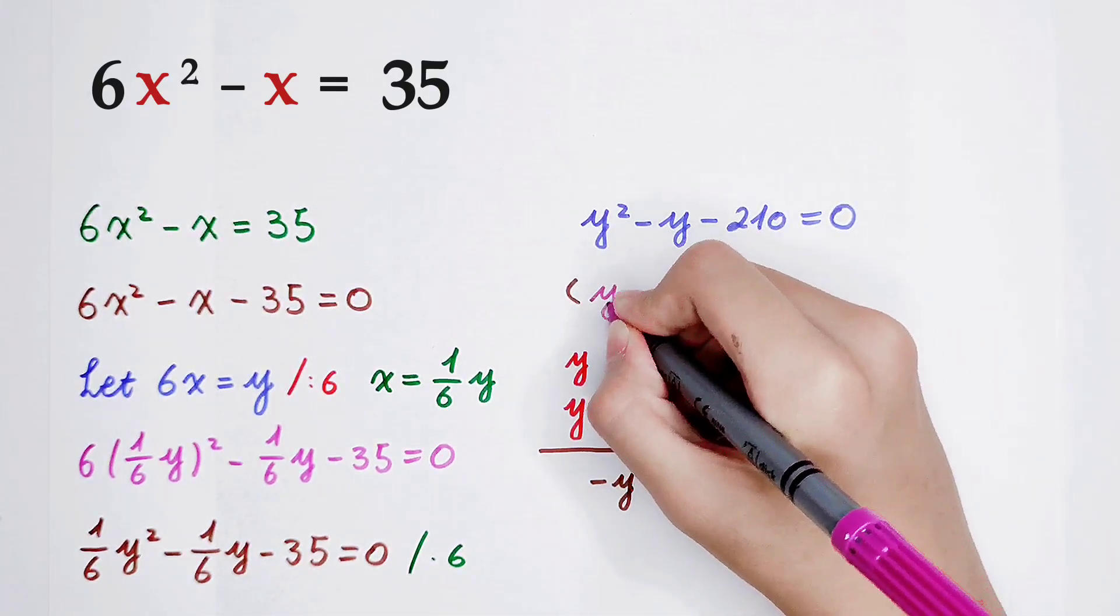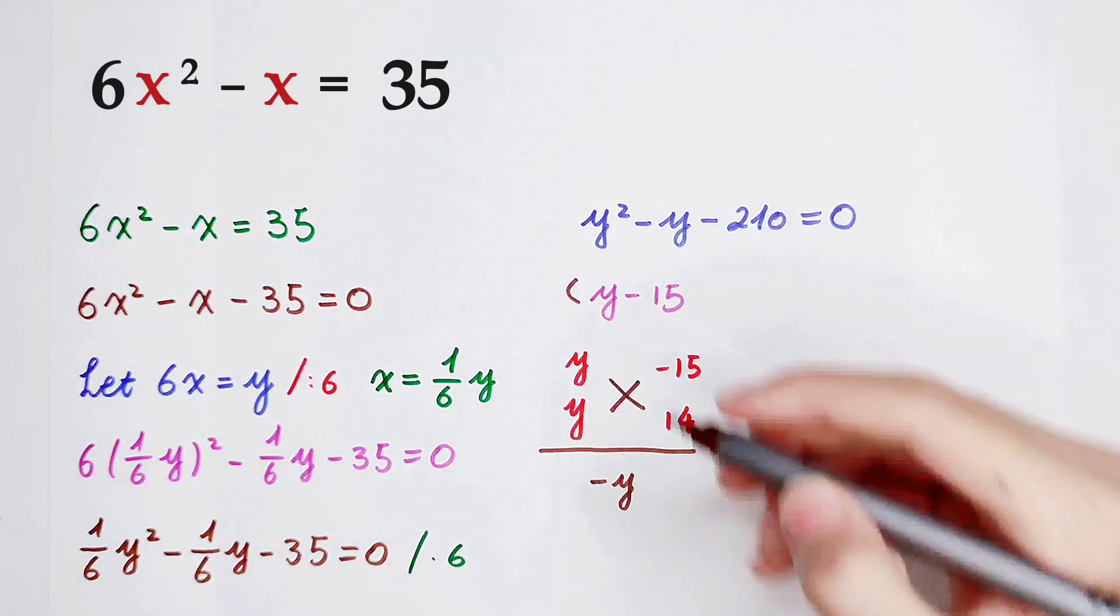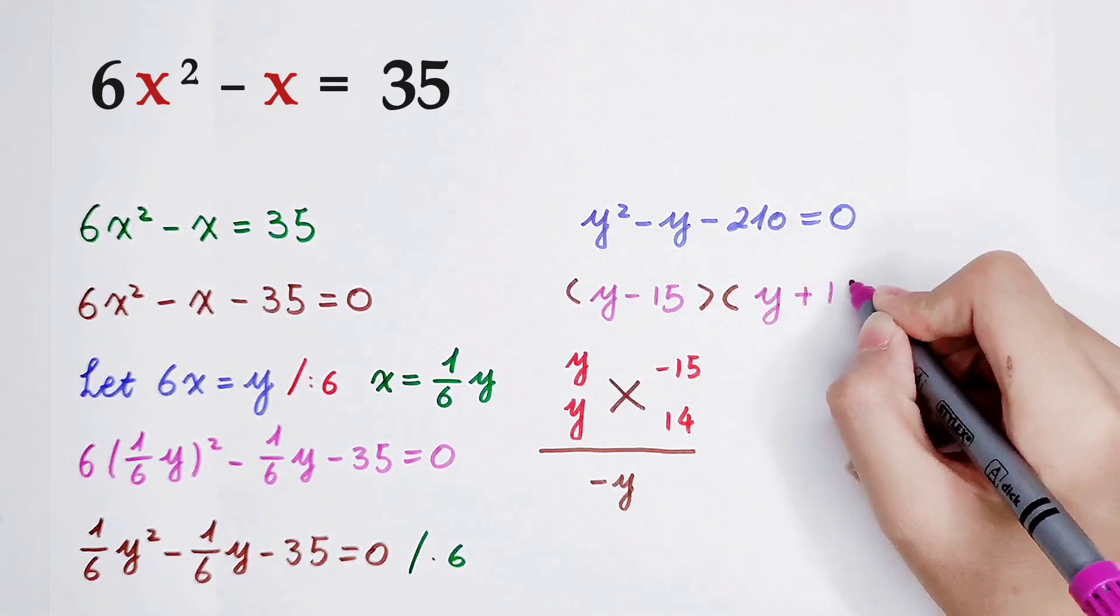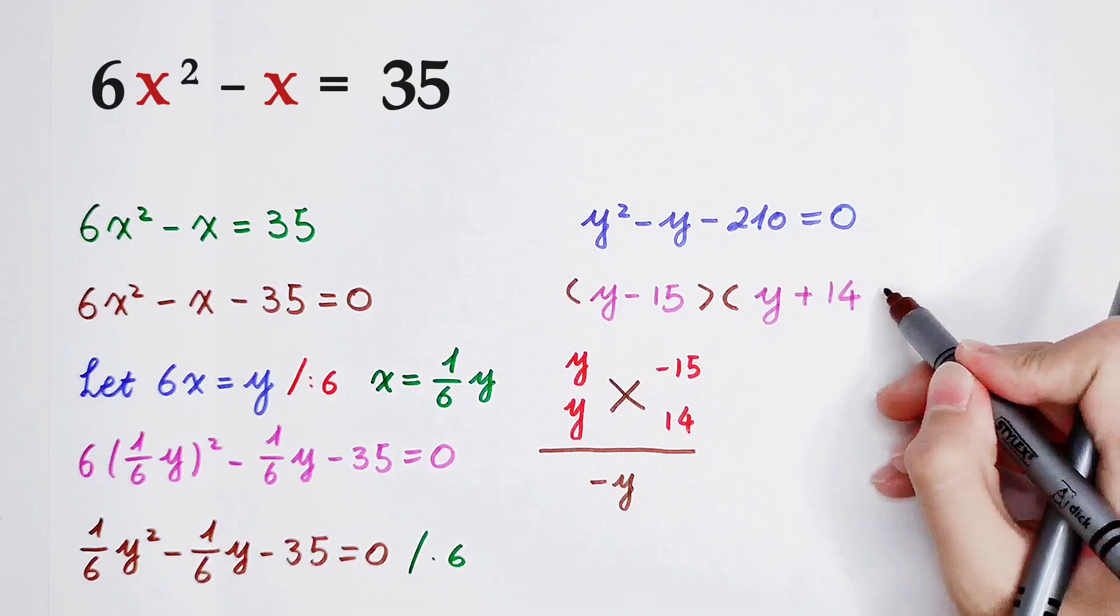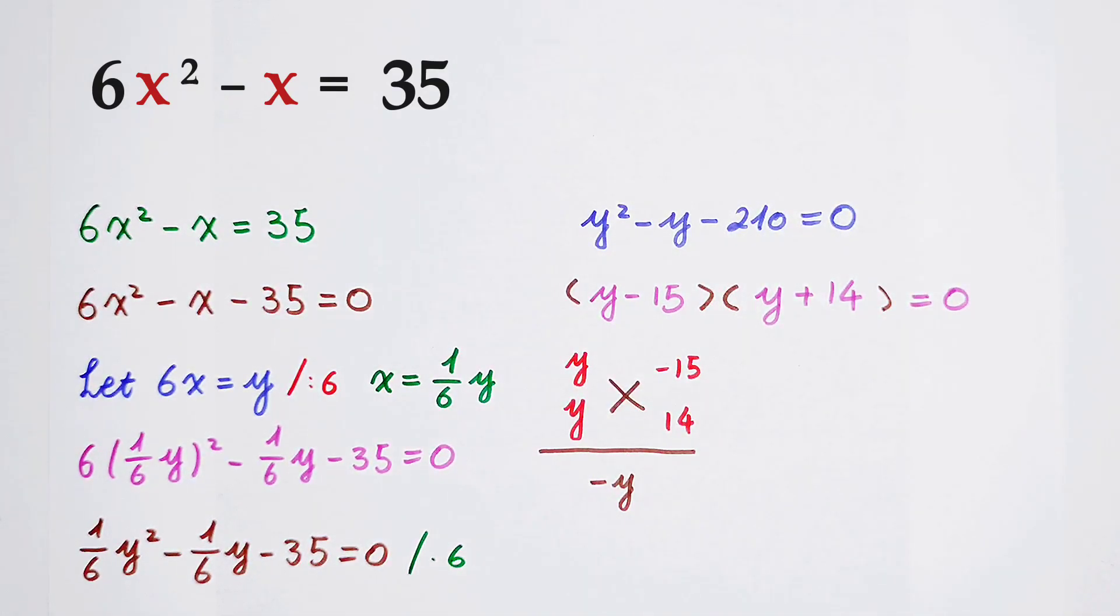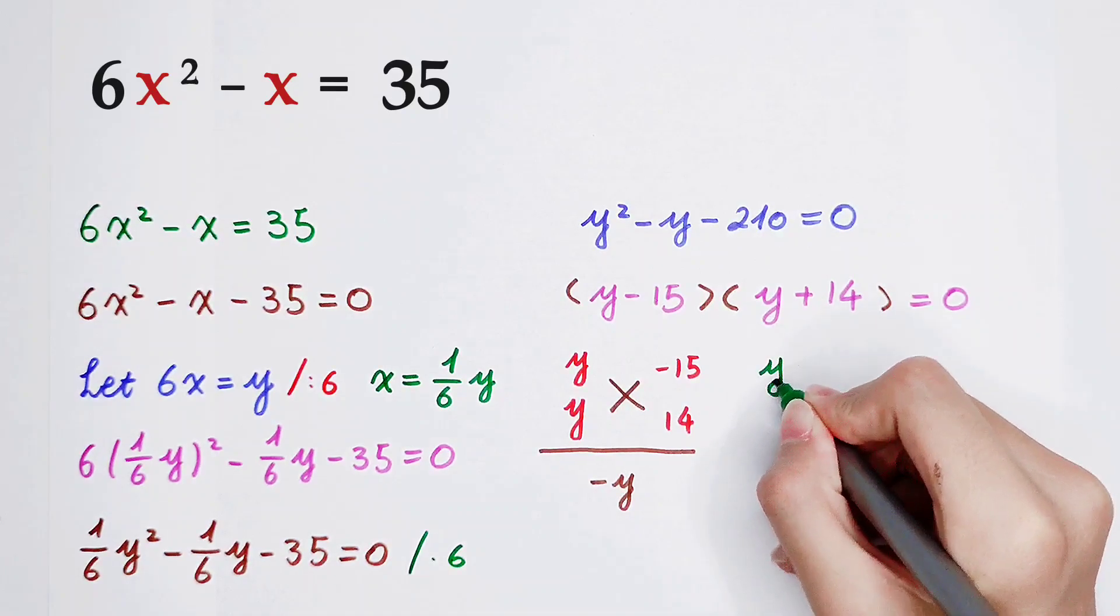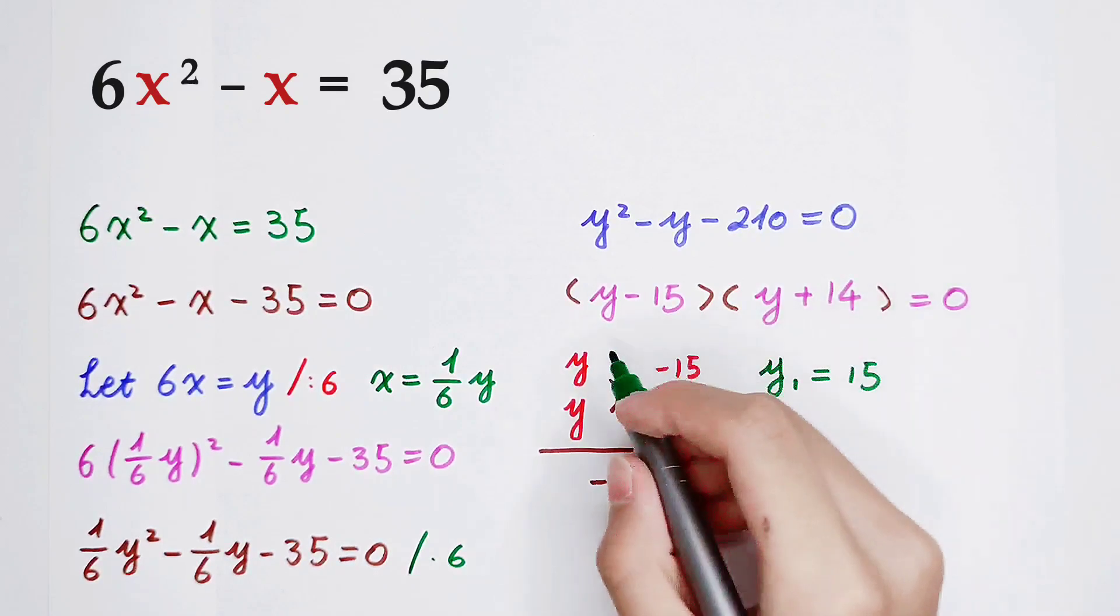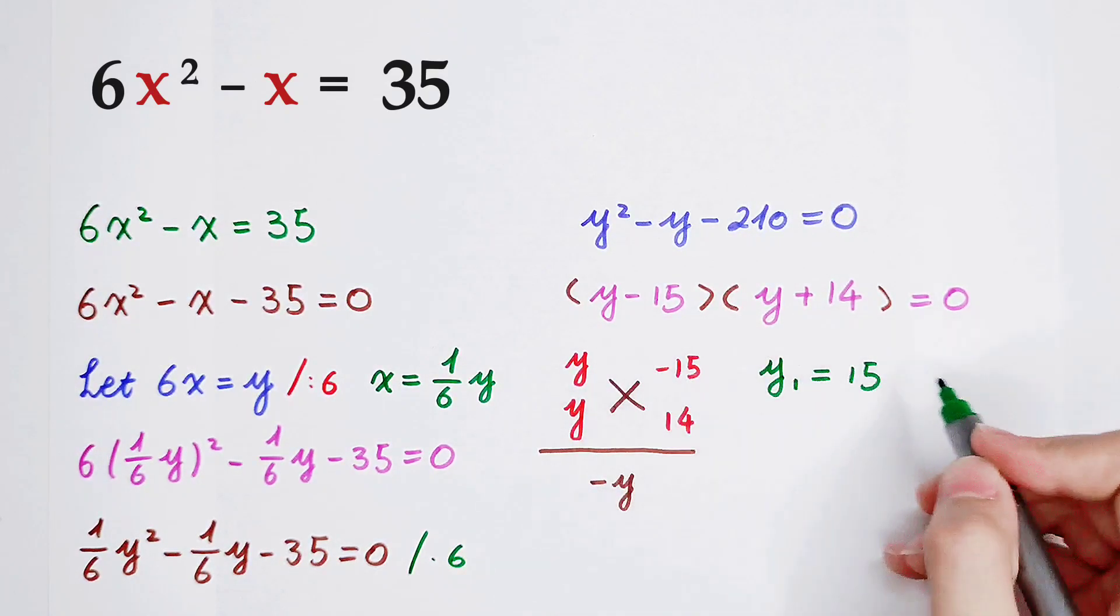So it's y minus 15, times y plus 14, equals 0. Okay, now y has two values. y1 equals 15, that is when y minus 15 equals 0, and y2 equals negative 14.